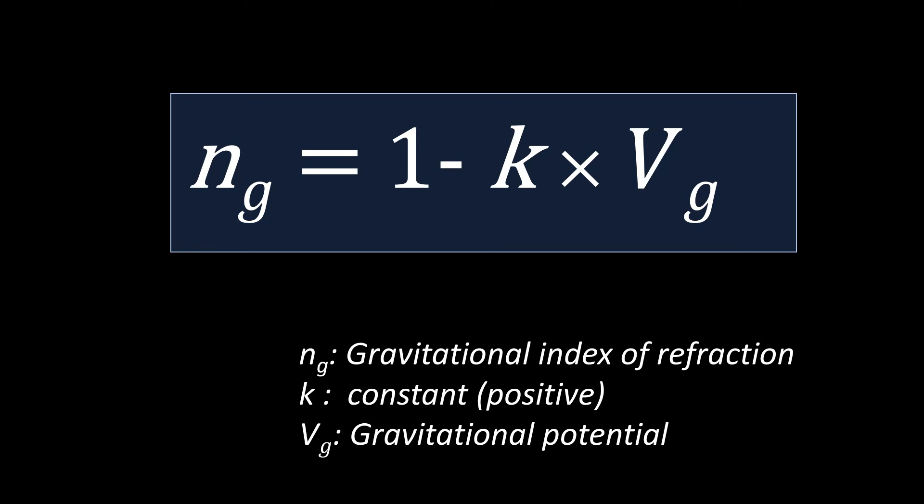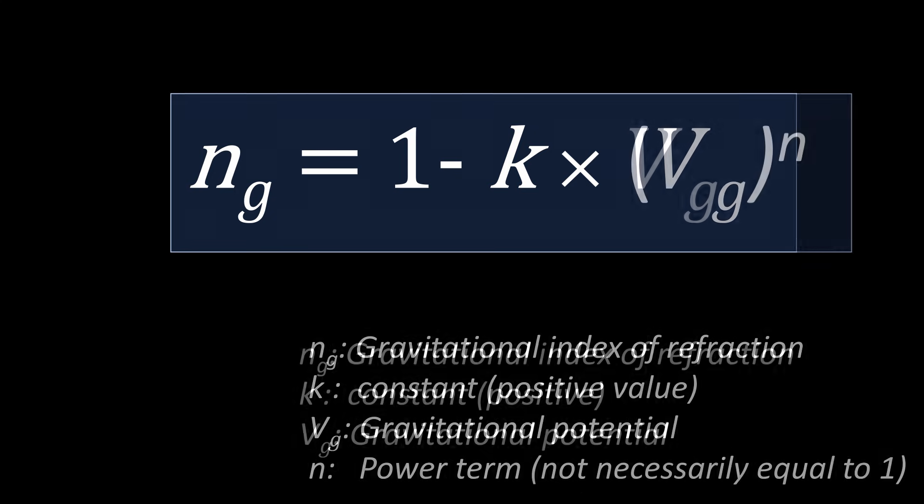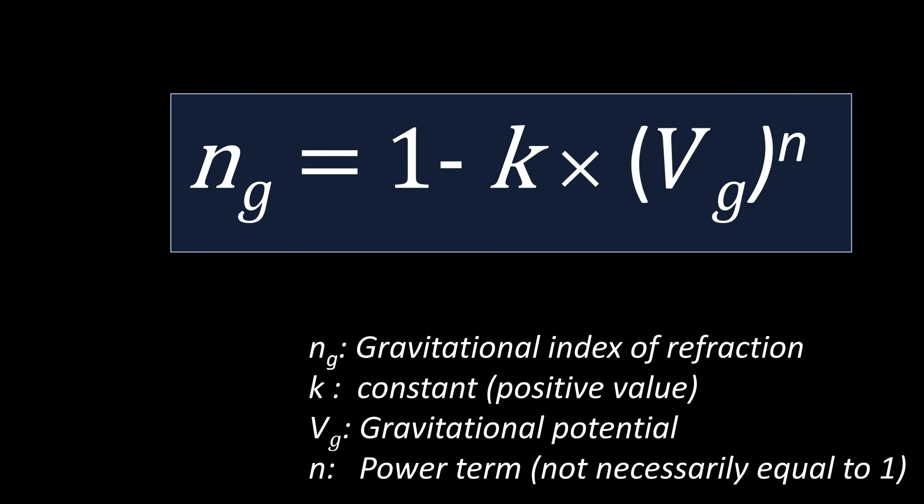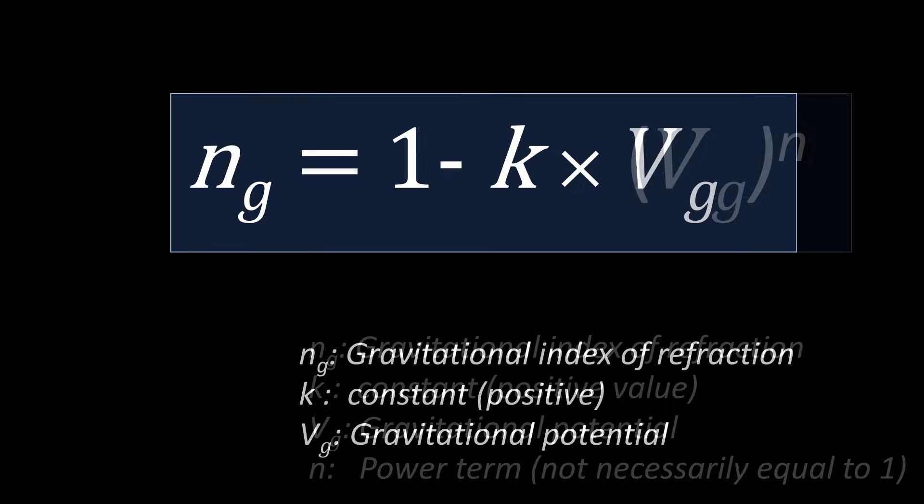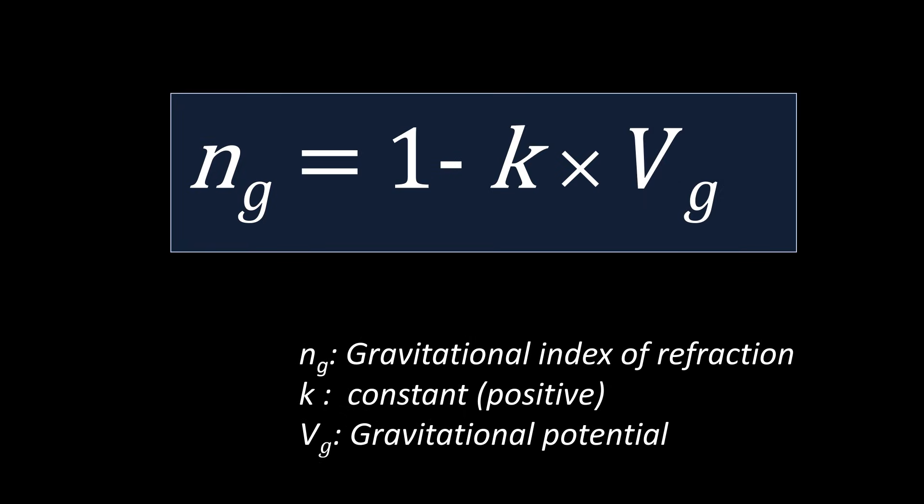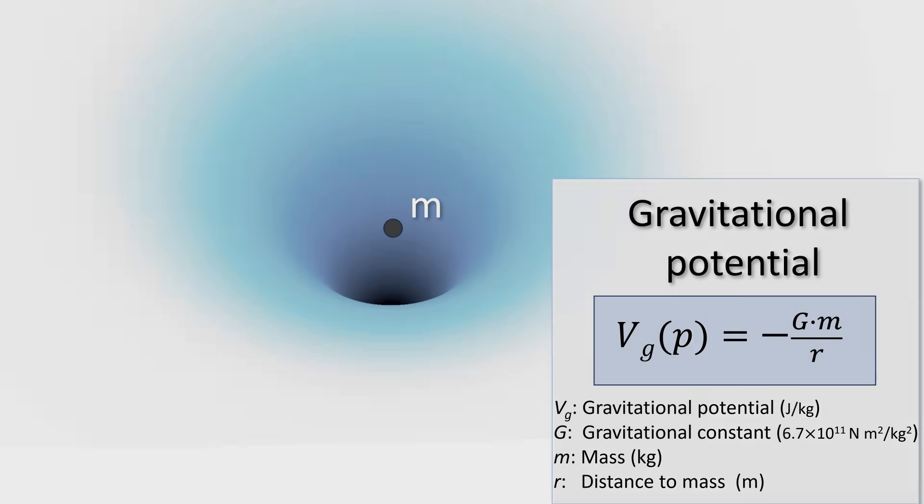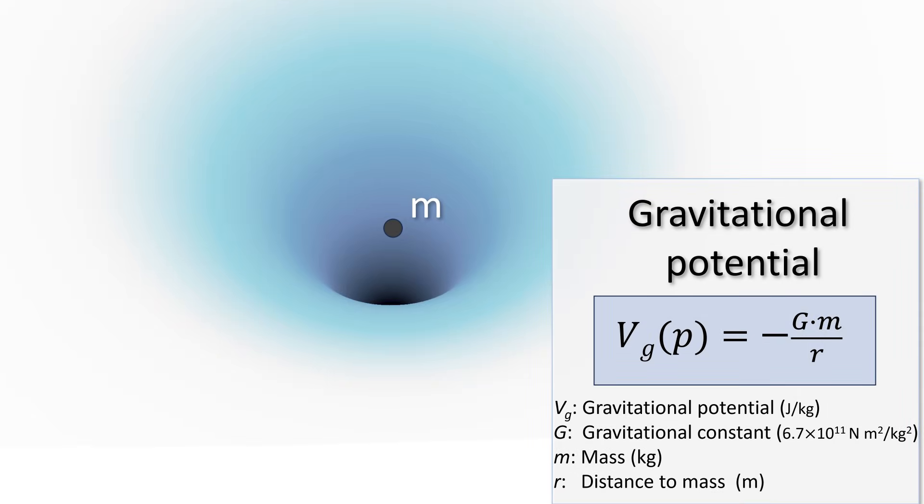Now of course, I have no idea whether these two properties are truly in a linear relationship. Maybe at extreme values the relationship breaks down and becomes non-linear, for example, in the order of the gravitational potential. But since I don't know, let's not worry about this too much. So let's assume that we have one point-like mass, and that we can describe the resulting gravitational potential with this fairly simple formula for every point in the space around it.